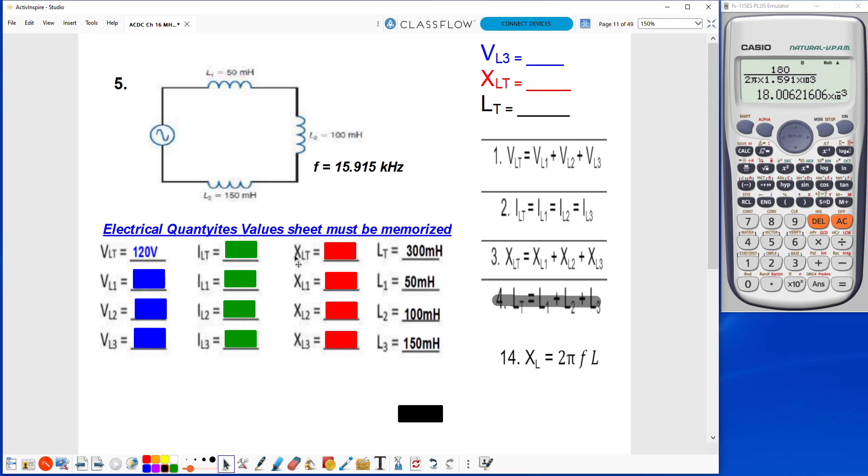Now I have to find my XLT. Formula number 14 shows us that XL equals 2πFL. So XLT will equal 2πFLT. So I'll say 2, hit shift, then hit the exponent button for pi.